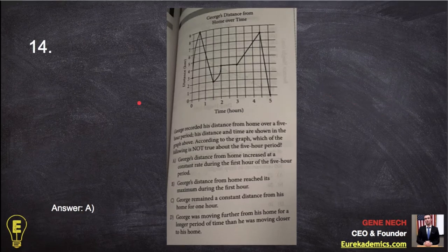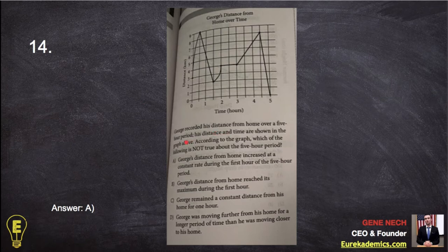Number 14. George recorded his distance from home over a five-hour period. So here's the time, 1, 2, 3, 4, 5. This is the distance from home.